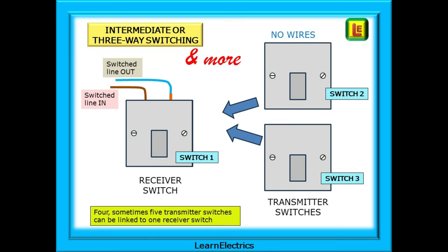Intermediate or three-way switching is now so easy. Again, no wires between switches. In fact, four, even five separate transmitter switches can be linked to one receiver switch. The linking process is simple and takes only a few seconds for each appliance. As with any hardwired installation, pressing any switch would change the on and off states of the lights. In our domestic light example here, only the first switch needs to have the switch wires going to it.